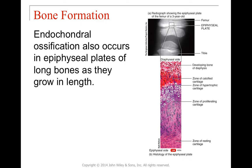Long bones also grow in length via the epiphyseal plate, which separates the epiphysis from the metaphysis and diaphysis. Here is a femur from a three-year-old — the epiphyseal plate is much wider than in adult tissue. There is a zone of proliferating cartilage on the epiphyseal side, then a zone of hypertrophic cartilage — hypertrophic meaning larger in size — and then a zone of calcified cartilage on the diaphyseal side. Eventually when growth stops, this becomes just an epiphyseal line.